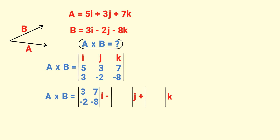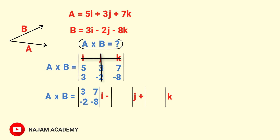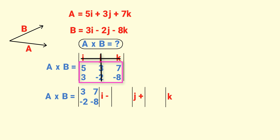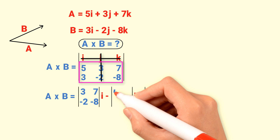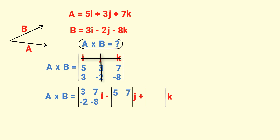For J, which is in the first row and second column, cancel the first row and second column. What is left behind is 5, 7, 3, and minus 8. So we write this 2 by 2 matrix for the J unit vector: 5, 7, 3, minus 8.